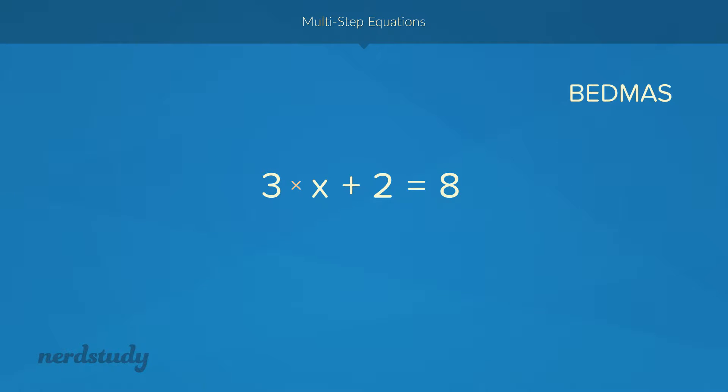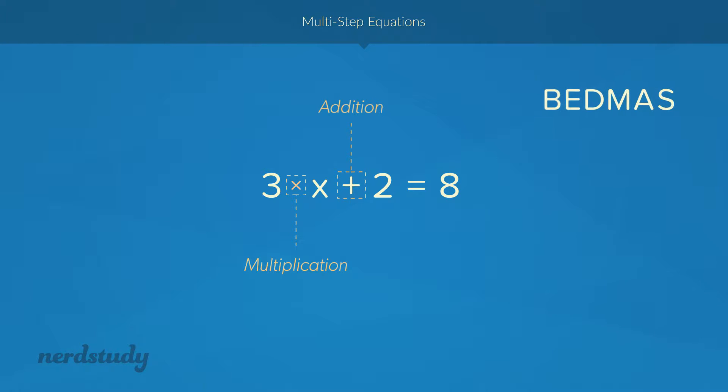Okay, so what do we have here? We have to deal with a multiplication and an addition. BEDMAS order says multiplication is dealt with before addition. Therefore, reverse BEDMAS order would mean that we deal with the addition before the multiplication.